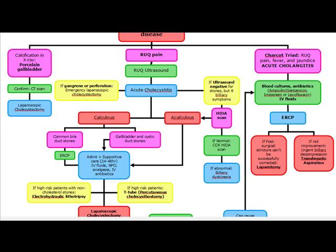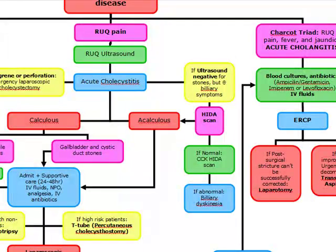Our next topic is going to be gallbladder disease. Let's start out by talking about a patient who has a constant right upper quadrant pain. This patient is going to have fever, leukocytosis, and right upper quadrant pain that doesn't go away. We're going to suspect acute cholecystitis, and how are we going to diagnose it? Our diagnostic test is going to be a right upper quadrant ultrasound.